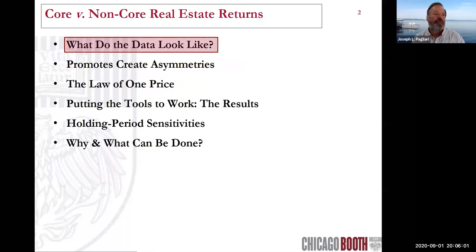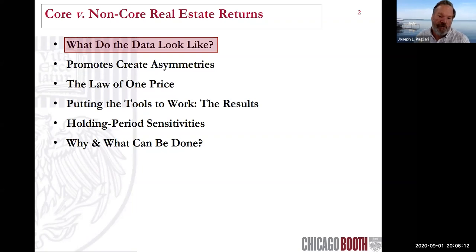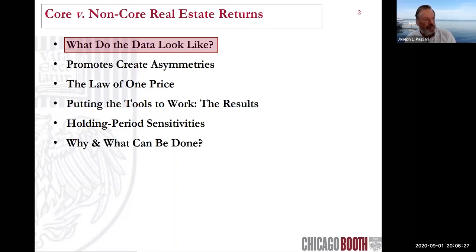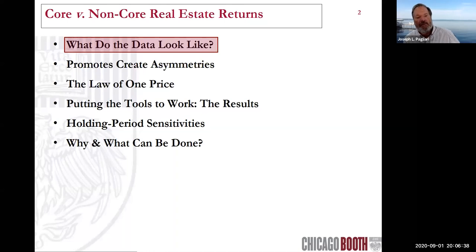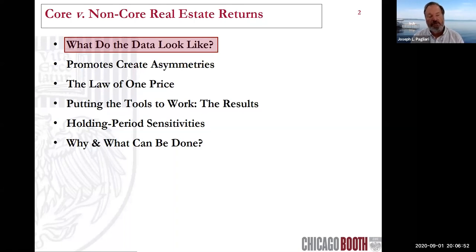In terms of the main points of the talk: first I'll discuss the data — what they look like, their advantages and disadvantages. Then I'll discuss how promoted or carried interest creates certain asymmetries. I'll talk about the law of one price, which says that any two assets with the same future expected cash flows ought to have the same price. I'll use leverage relative to net core returns to create a risk-return continuum, apply those tools to the historical data, look at holding period sensitivities, and finally discuss why this underperformance persists and what we might do about it.